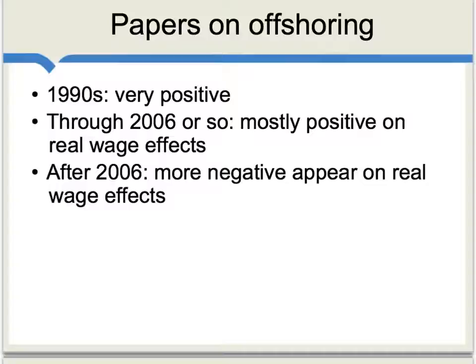To make it more complicated, conclusions in papers on offshoring may depend on when the paper was published. Papers from the 1990s tend to be very positive about the wage effects of offshoring in the wealthier country. Papers through about 2006 are mostly positive but beginning to be more skeptical. After 2006, many papers become more negative on the real wage effects in wealthier countries. The later papers may in some sense be better, but it could also be argued that later data points are outliers. Over time, there seems to have been an ongoing shift of opinion.